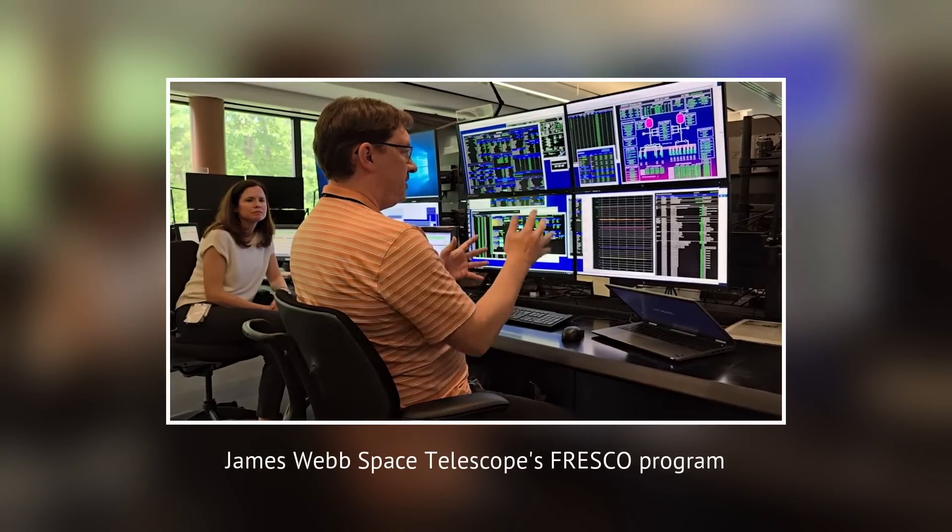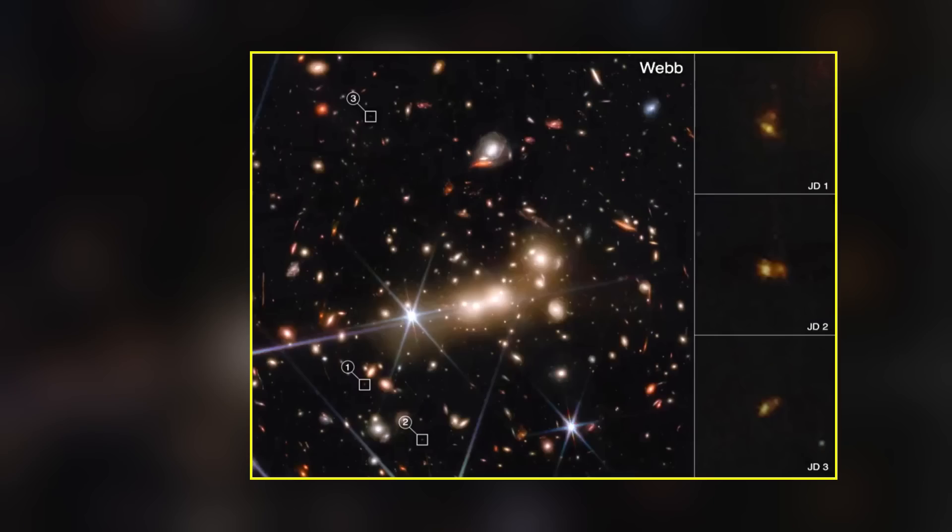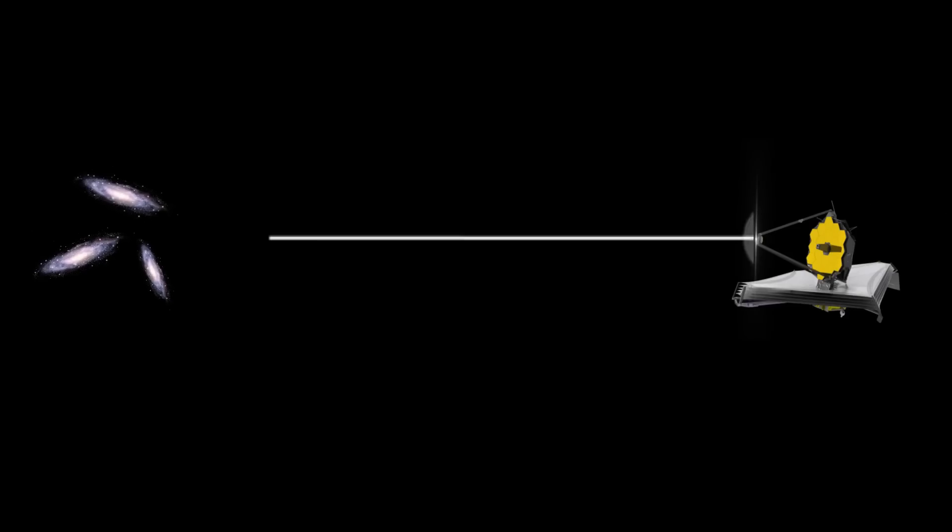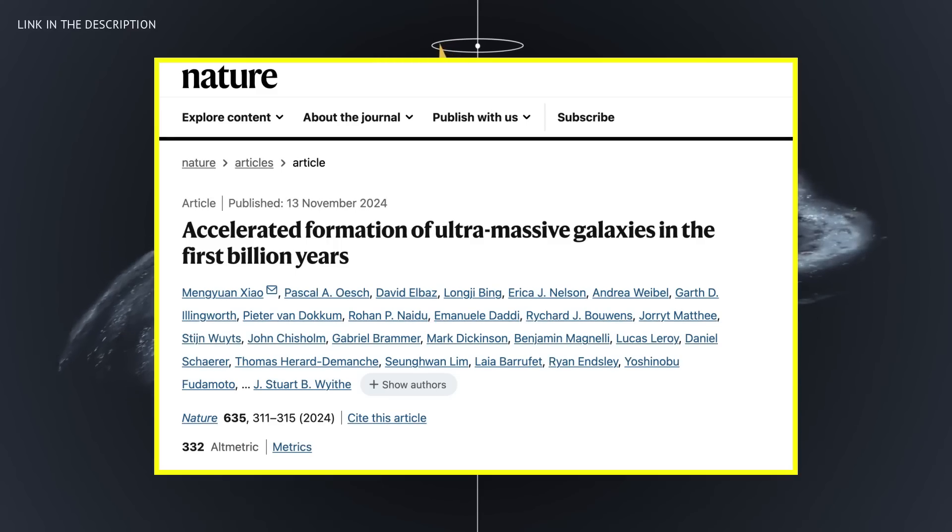The James Webb Space Telescope's FRESCO program enabled this astonishing discovery, utilizing the NIRCam grism spectrograph to precisely determine the distances and stellar masses of galaxies.